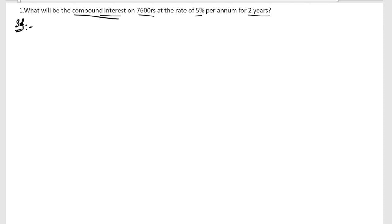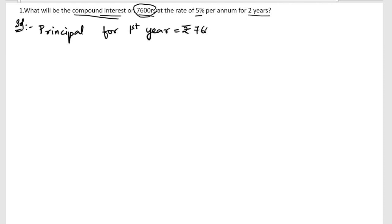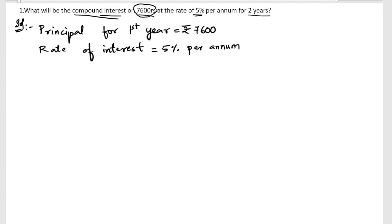In the solution, first of all we will write what is given. They have given the amount — whichever amount they give is called the principal amount. So here the principal amount for the first year is rupees 7600. The rate of interest is 5% per annum. So these are the two given values, and one more thing is 2 years.